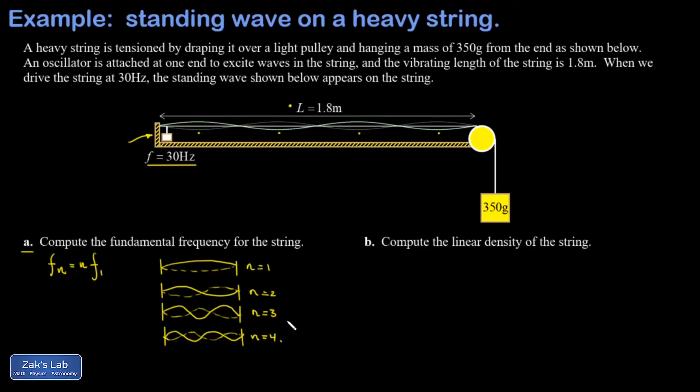We can say that f4, the frequency of the fourth harmonic, is equal to four times the frequency of the fundamental. So the frequency of the fundamental is just the frequency of the fourth harmonic divided by four - that's 30 hertz over four - and I find that the frequency of the fundamental for this string is 7.5 hertz.